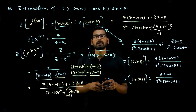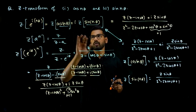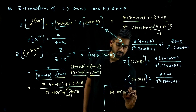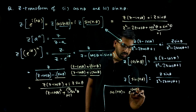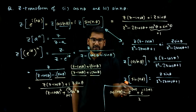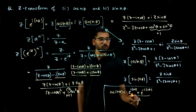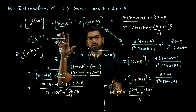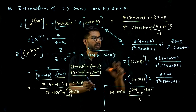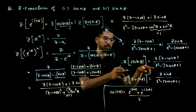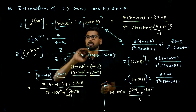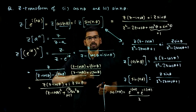The straightforward alternative method uses the fact that cos(nθ) can be written as (e^(inθ) plus e^(−inθ)) over 2. You take the Z-transform, split the terms, and you get the same answer. So whenever you see cos and sine in pair and they've asked to find the transform, use this Euler's formula method.